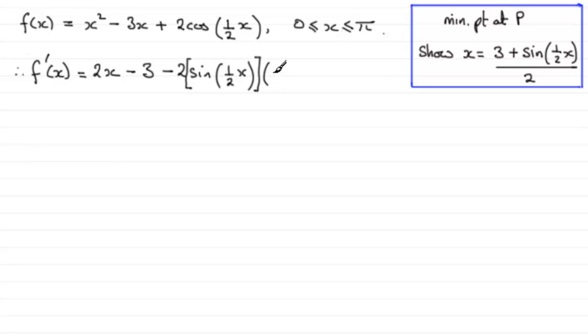Okay, so that's the chain rule for that part. And if we tidy this up you've got 2x minus 3, and then minus 3 times this half just gives us minus 1, so minus 1 lot of sine of half x.